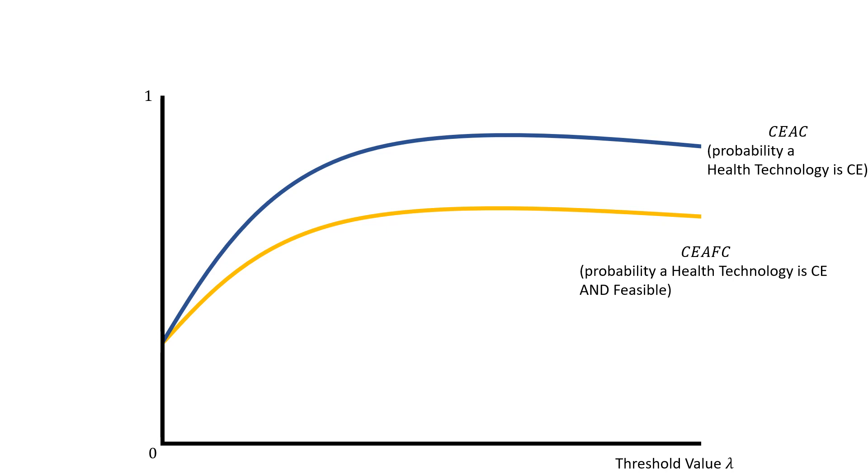To look at this geometrically, we have our usual picture of our SEAC which is denoted by this blue curve here. This takes on the interpretation of the probability of our health technology being cost effective given a particular threshold value at each point, following the same notation that you usually do for your SEAC.